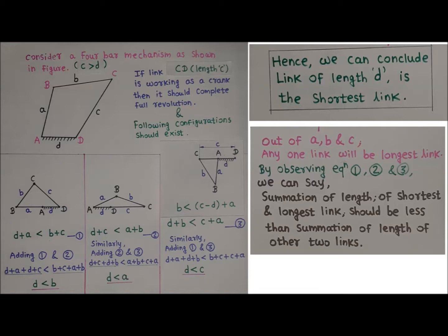Hence, in a four-bar mechanism, if the summation of the lengths of the shortest and longest links is less than the summation of the lengths of the other two links, and if the shortest link is fixed, then output link CD will also work as a crank. The same condition applies for the input link — so both input and output links work as cranks, giving a double crank mechanism.